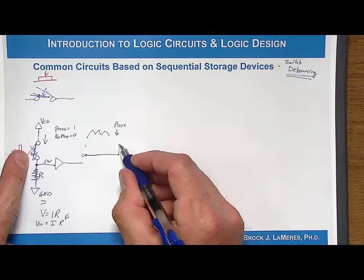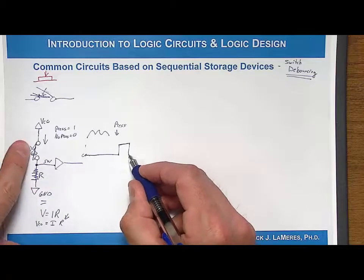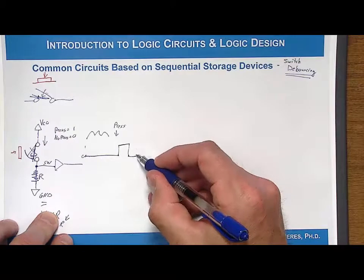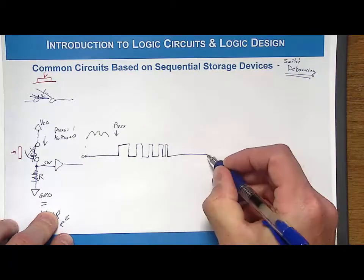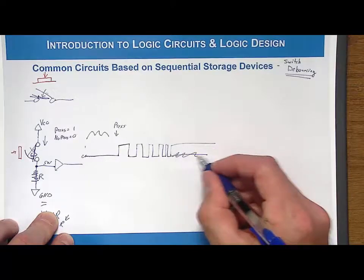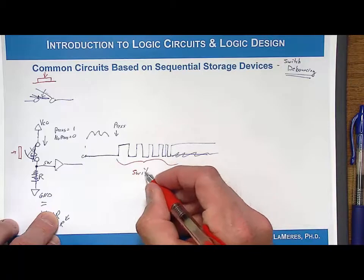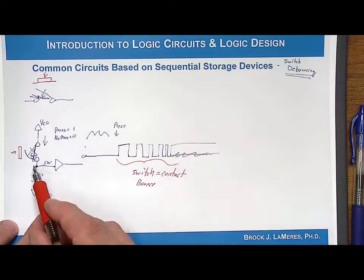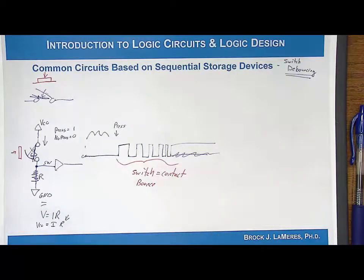We have a serious problem. The switch will bounce and open up, connecting back to ground, then bounce back and connect to VCC, continuing this transition between zero and one until it finally reaches its steady-state value. This region is a serious problem - switch bounce, also called contact bounce - because the mechanical bouncing is pulling the signal between VCC and ground, resulting in multiple logic transitions.